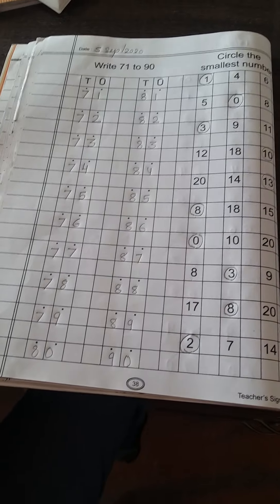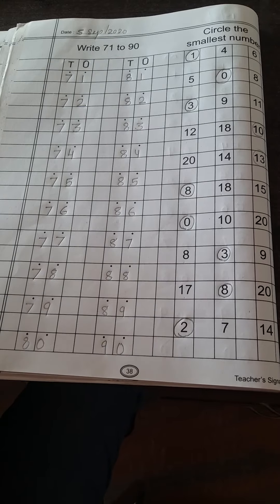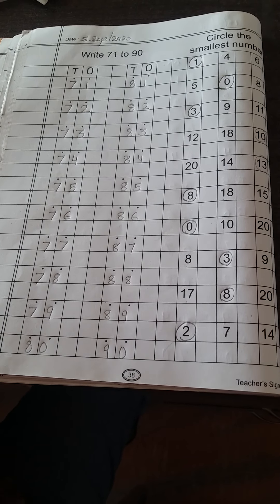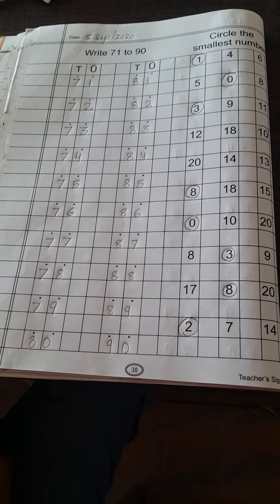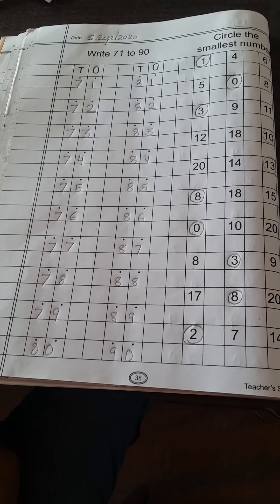Smallest number मतलब यह होता है कि जो number हमें दिये हुए हैं, उसमें सबसे छोटा number कौन सा? Counting बोलते हैं तो सबसे पहला number उनमें कौन सा आता है?